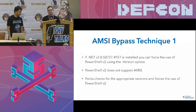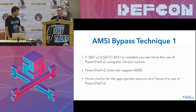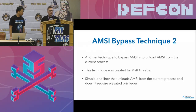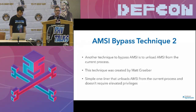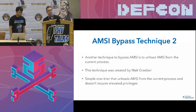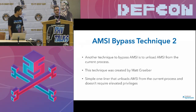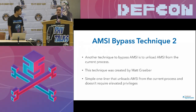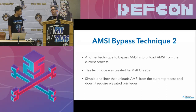The more robust AMSI bypass technique was created by a guy called Matt Graber. It's a simple one-liner that unloads AMSI from the current process. It doesn't require elevated privileges and it works with PowerShell V3 with AMSI — that's the robust one that usually works most of the time. There are a bunch of other bypass techniques that have been presented over the years, and we'll probably add some more as we continue to develop Porsche.